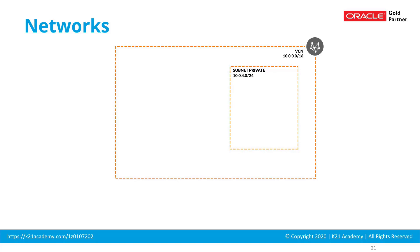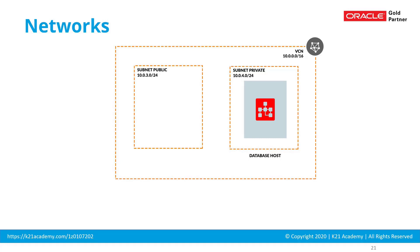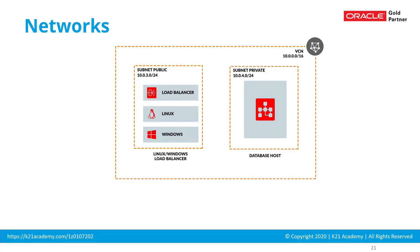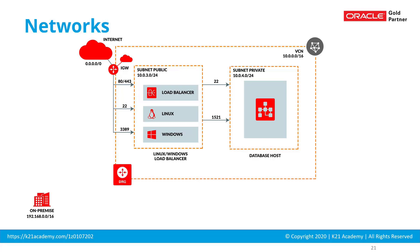Subnets can be private or public. Secure applications like databases go into a private subnet, while load balancers or end-user-facing resources go into a public subnet. Machines in different subnets need to talk to each other, and this is handled by a firewall — called a security list in OCI terminology — or you can create a network security group. End users accessing load balancers from the internet require an internet gateway, or IGW.